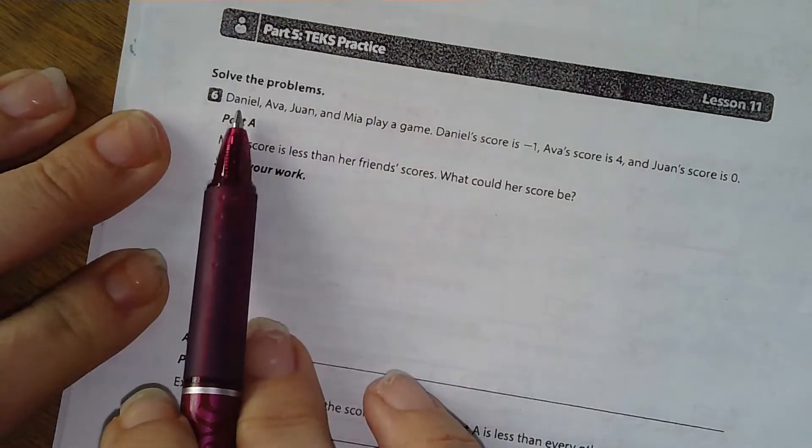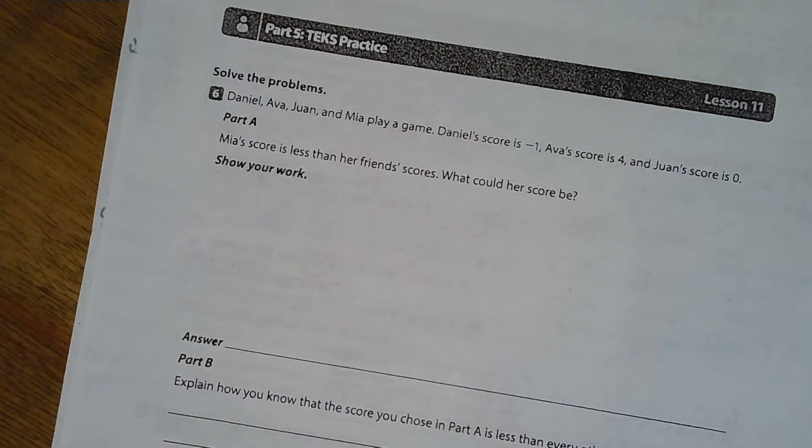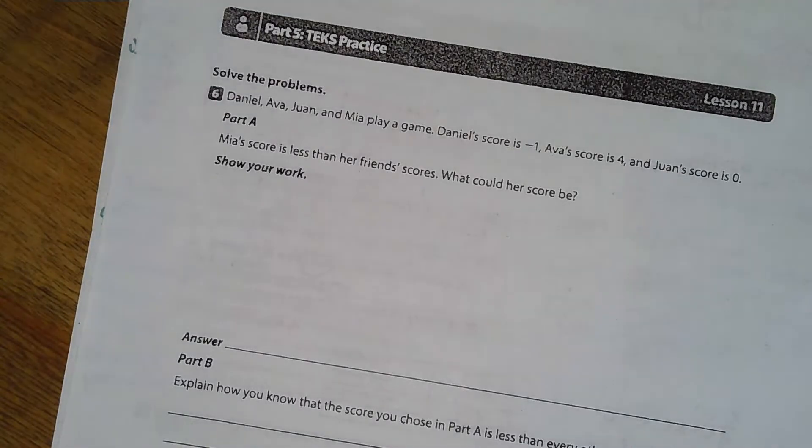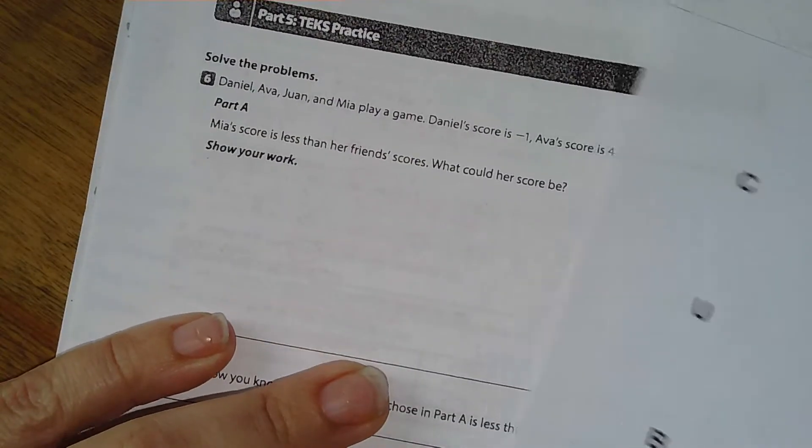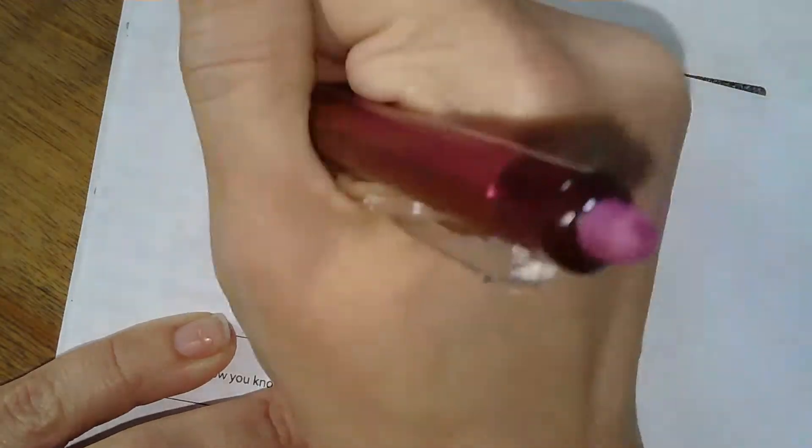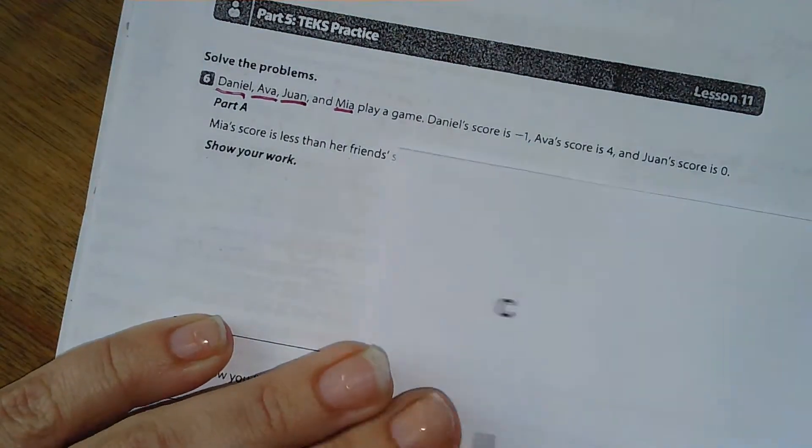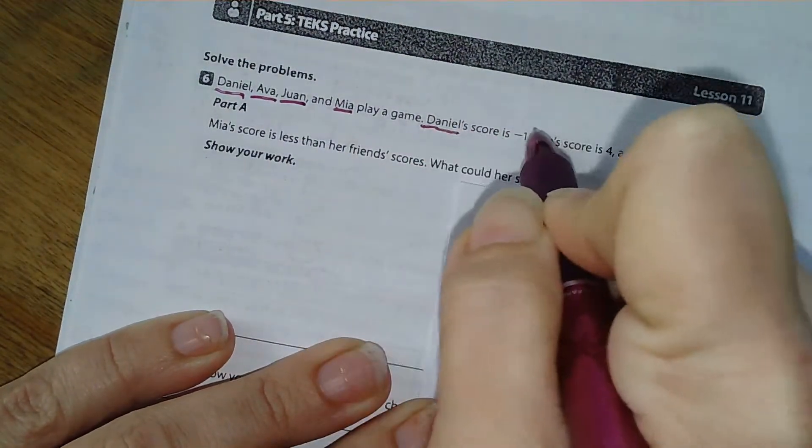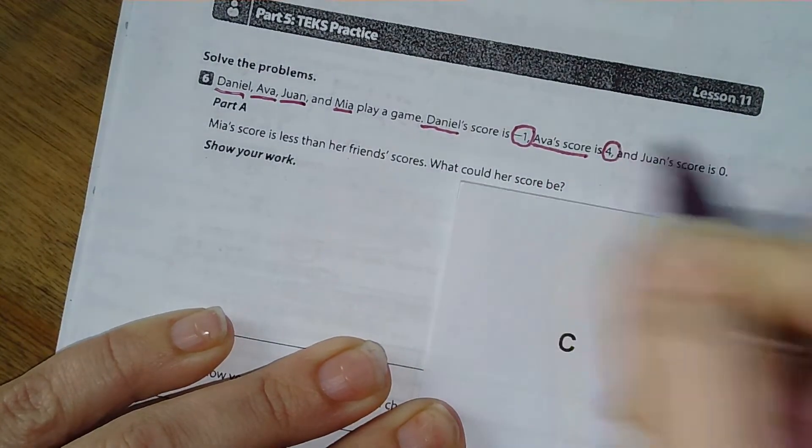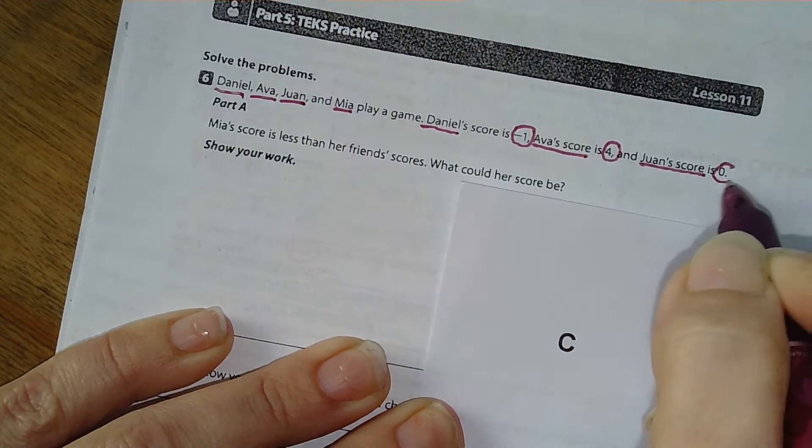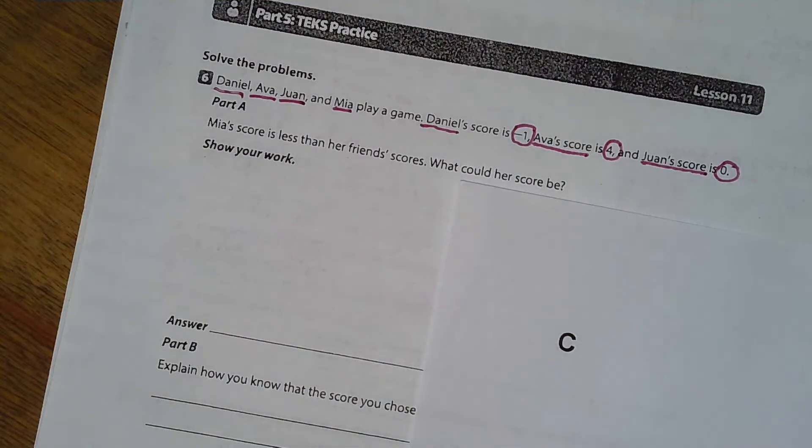Solve the problem. Daniel, Ava, Juan, and Mia play a game. Okay, so in my head, I'm going to be thinking four people are playing a game. Let me grab my cubes here. I have got Daniel, Ava, Juan, and Mia play a game. Daniel's score is negative one. Ava's score is four and Juan's score is zero. So in my head, I'm picturing four friends sitting around a table playing the game.